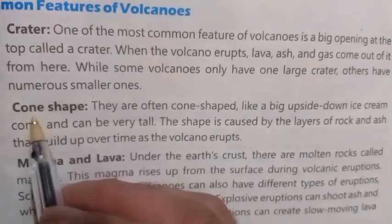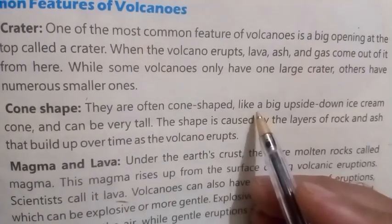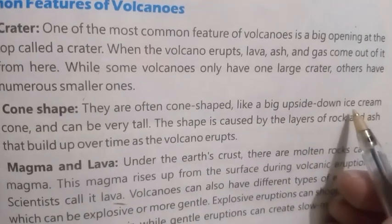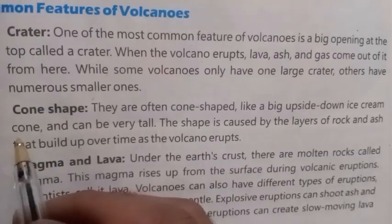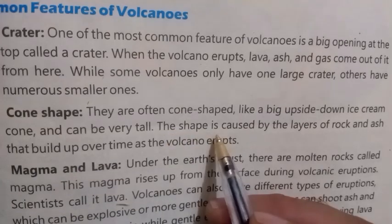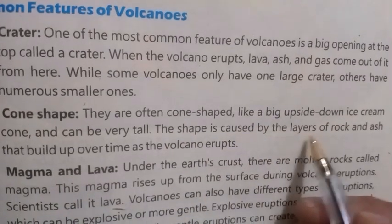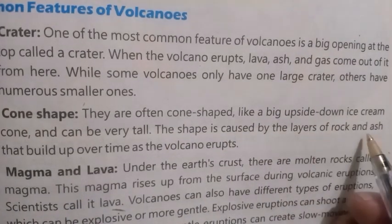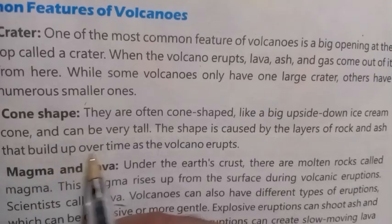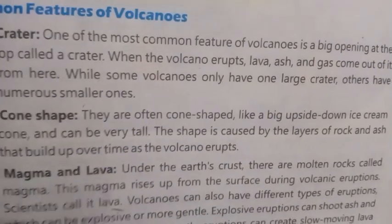Number two: Cone shape. Volcanoes are often cone-shaped, like a big upside-down ice cream cone, and can be very tall. The shape is caused by the layers of rock and ash that build up over time as the volcano erupts.